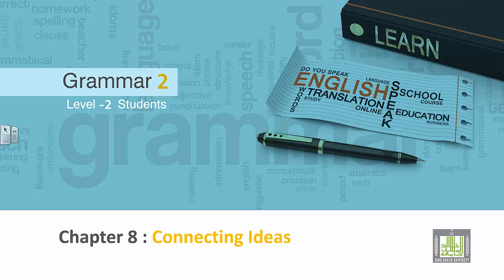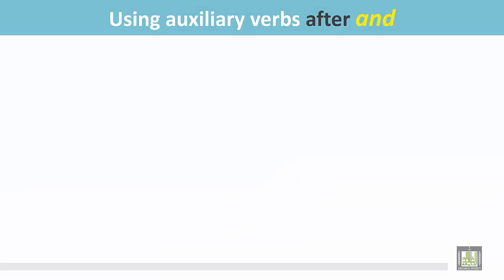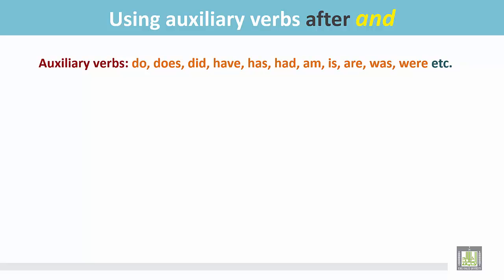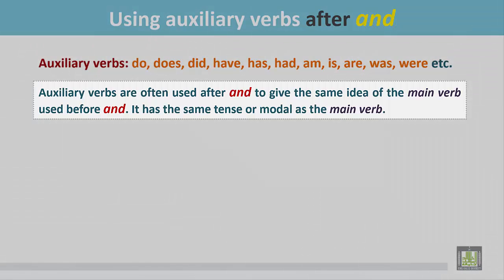Grammar 2 for level 2 students, chapter 8: connecting ideas using auxiliary verbs after 'and'. These are auxiliary verbs used in present simple, present continuous, present perfect, past simple, past perfect, and so on. Auxiliary verbs are often used after 'and' to give the same idea of the main verb used before 'and'. It has the same tense or modal as the main verb.